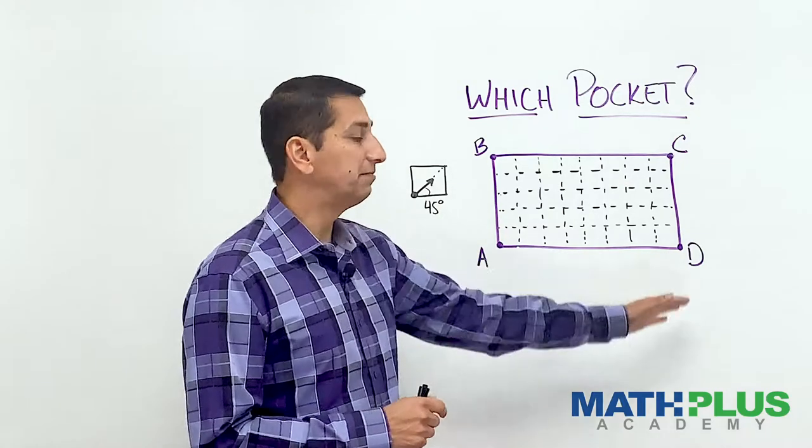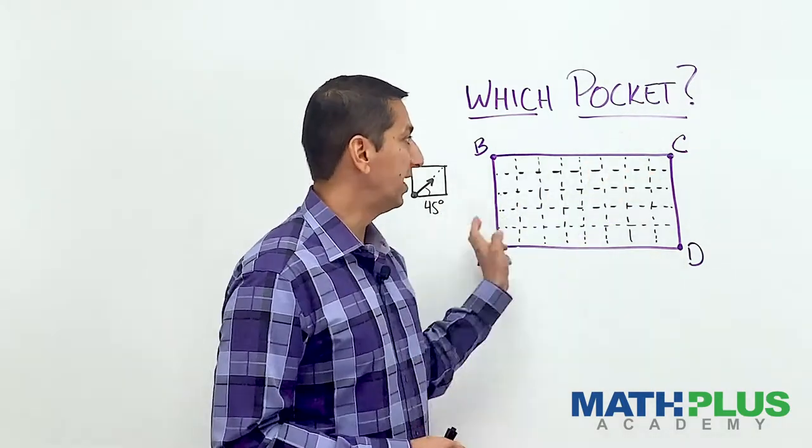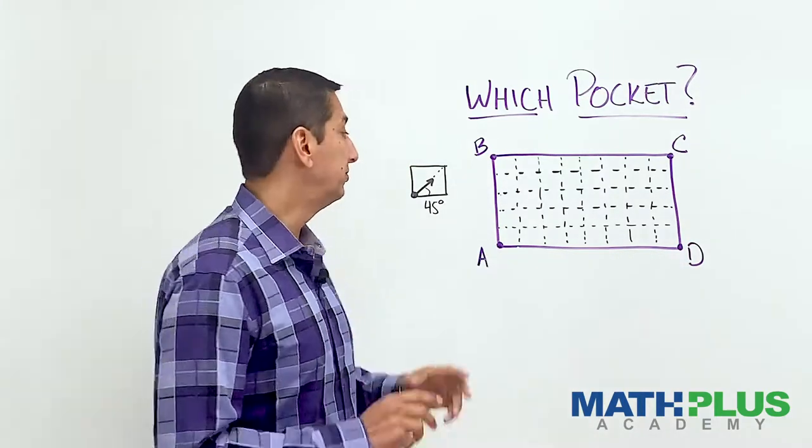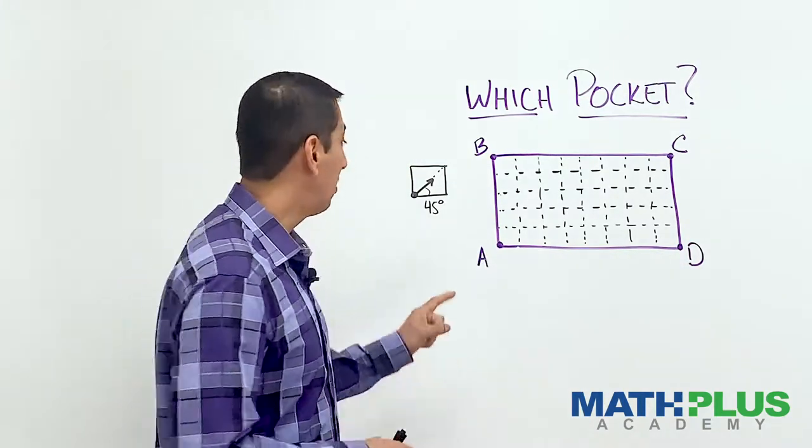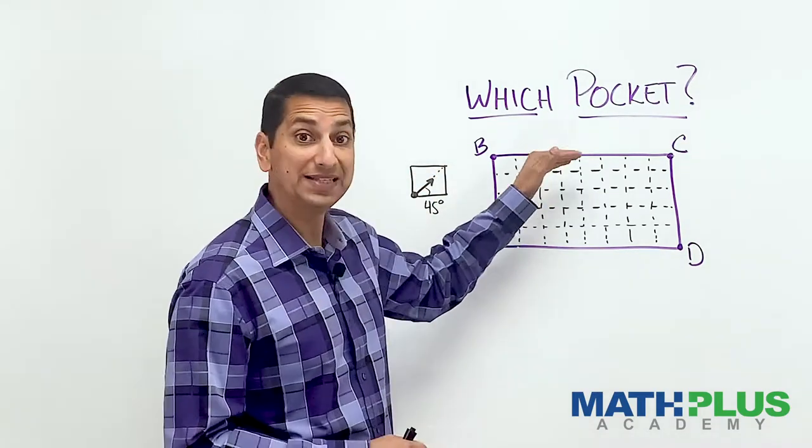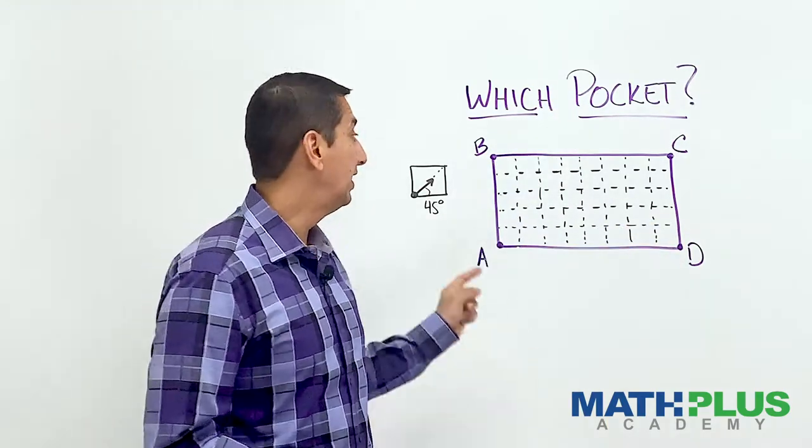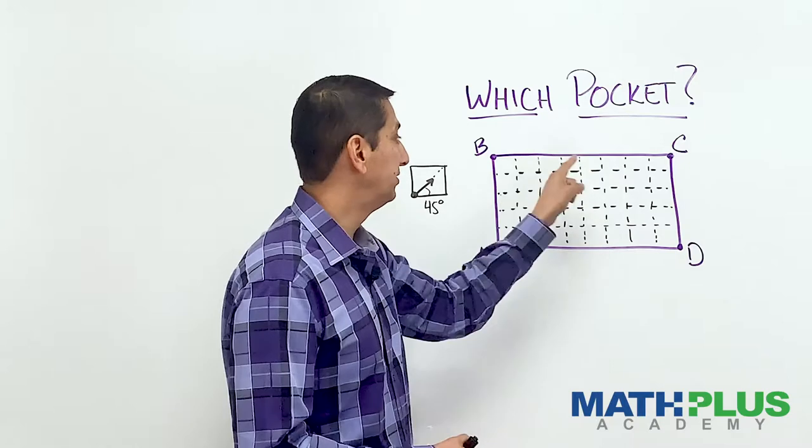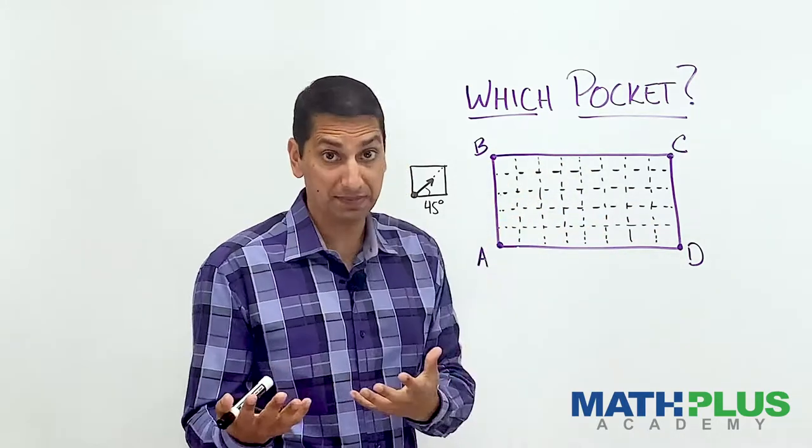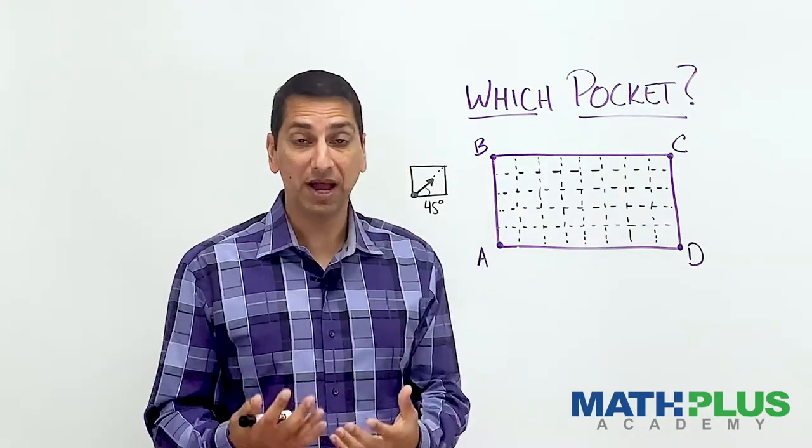Imagine you have a table like this, a billiard table, and there are only four pockets in the corners, A, B, C, and D. And we're always going to shoot the ball or hit the ball from A at a 45 degree angle, so it'll go up like this. When it hits an edge, it will bounce back at a 45 degree angle, and it'll sort of continue around and bouncing off the walls and whatnot until eventually, maybe, hopefully, it ends up in one of these four pockets.